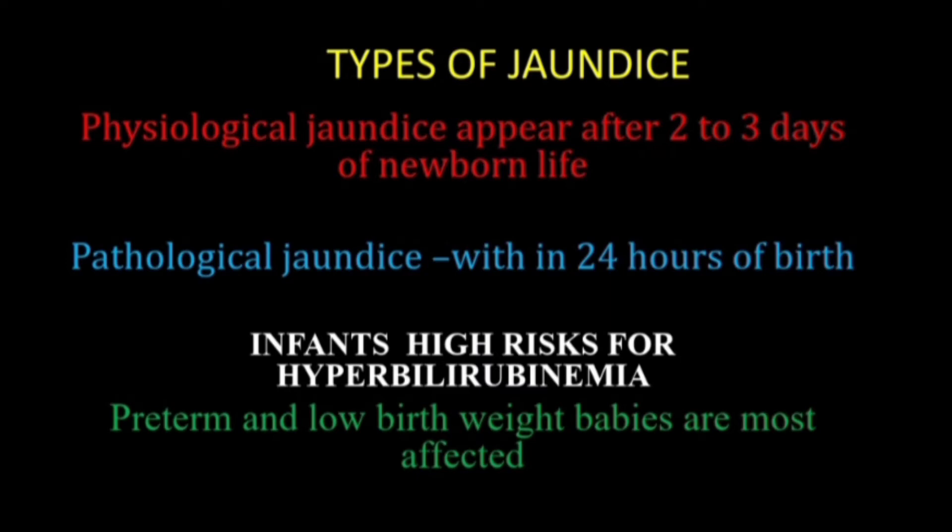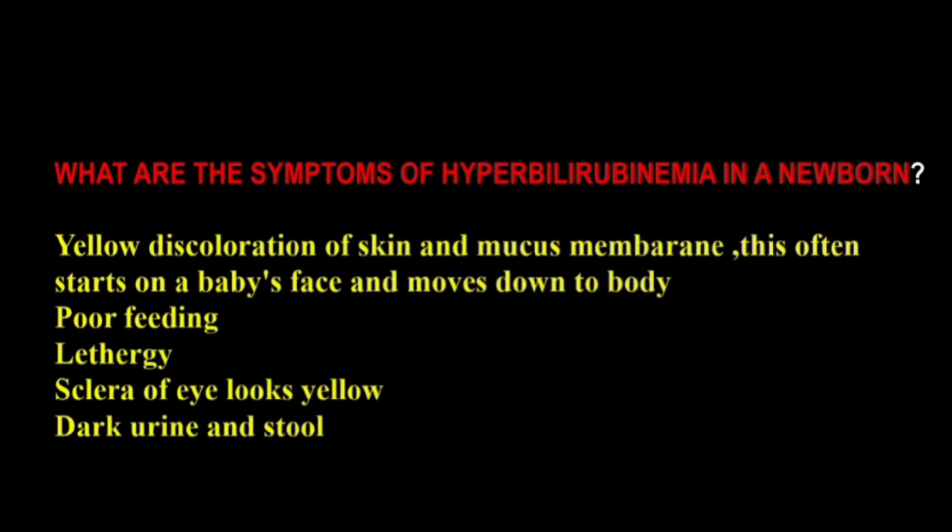There are two types of jaundice. The first is physiological jaundice, which appears after two to three days of newborn life. Pathological jaundice appears within 24 hours of birth. The babies who are at high risk for hyperbilirubinemia are preterm and low birth weight babies compared to normal term babies.